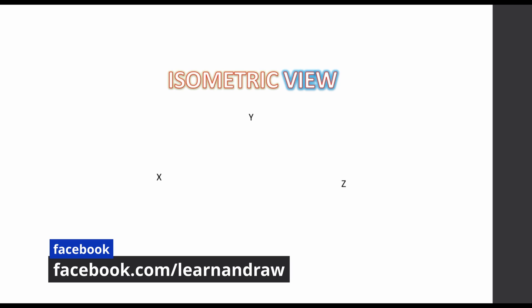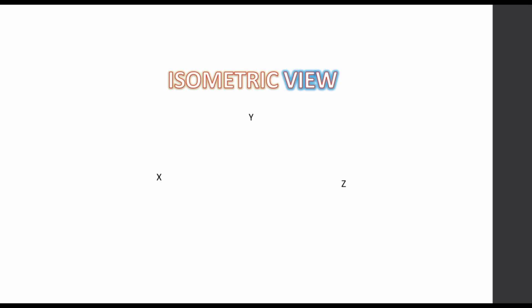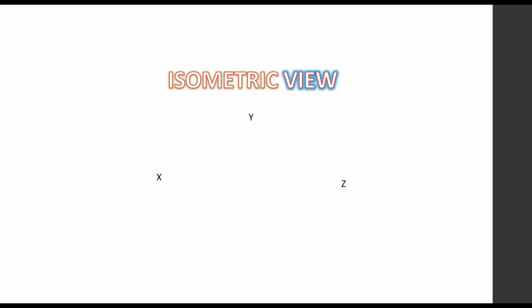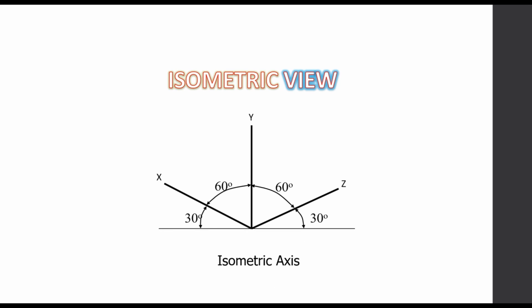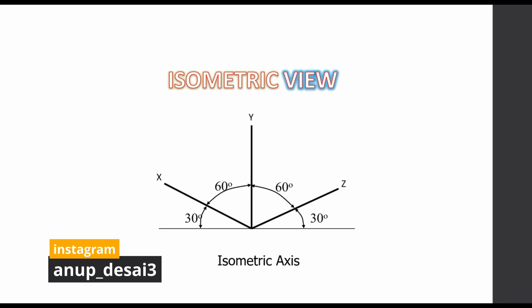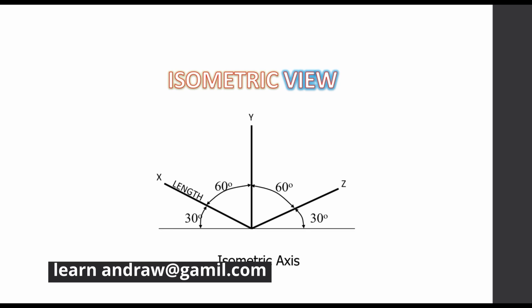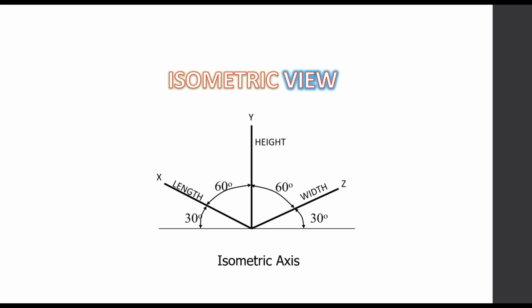In this problem, an orthographic view of an object will be given, and we have to convert it into isometric view. We can do this by using the isometric axes: the x-axis, y-axis, and z-axis. Along the x-axis we draw the length, along the y-axis the height, and along the z-axis the width. The x-axis is drawn at 30 degrees to the baseline, y-axis at 90 degrees, and z-axis on the right side at 30 degrees to the baseline.